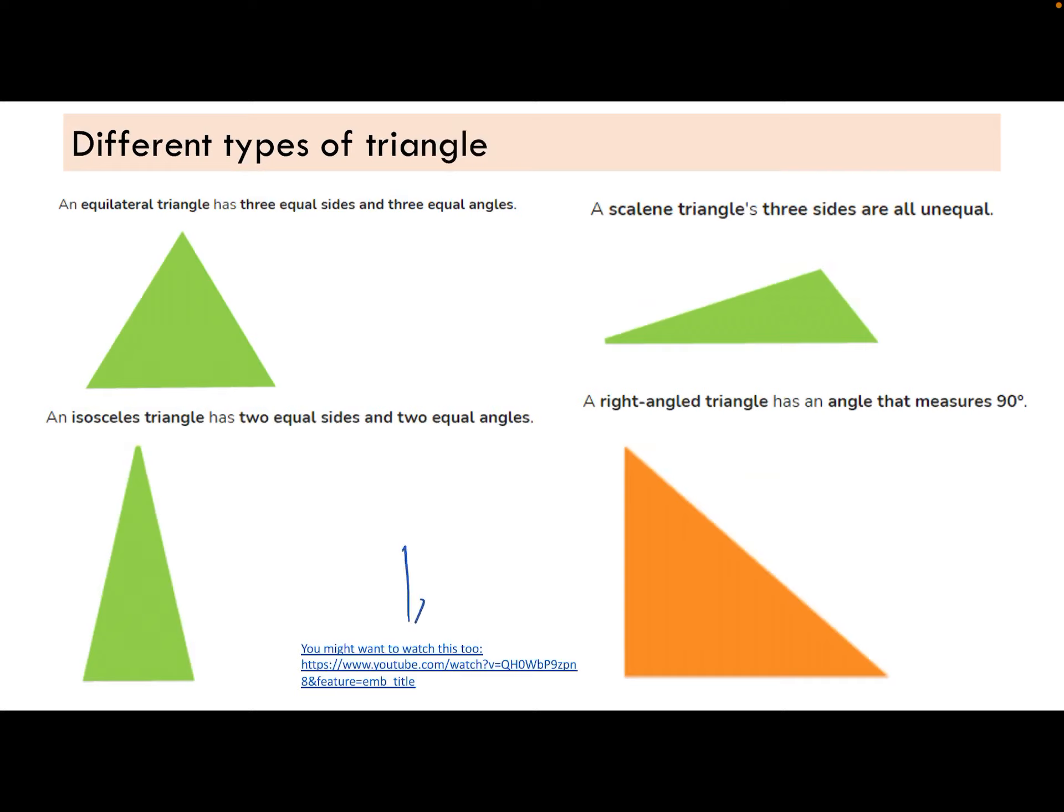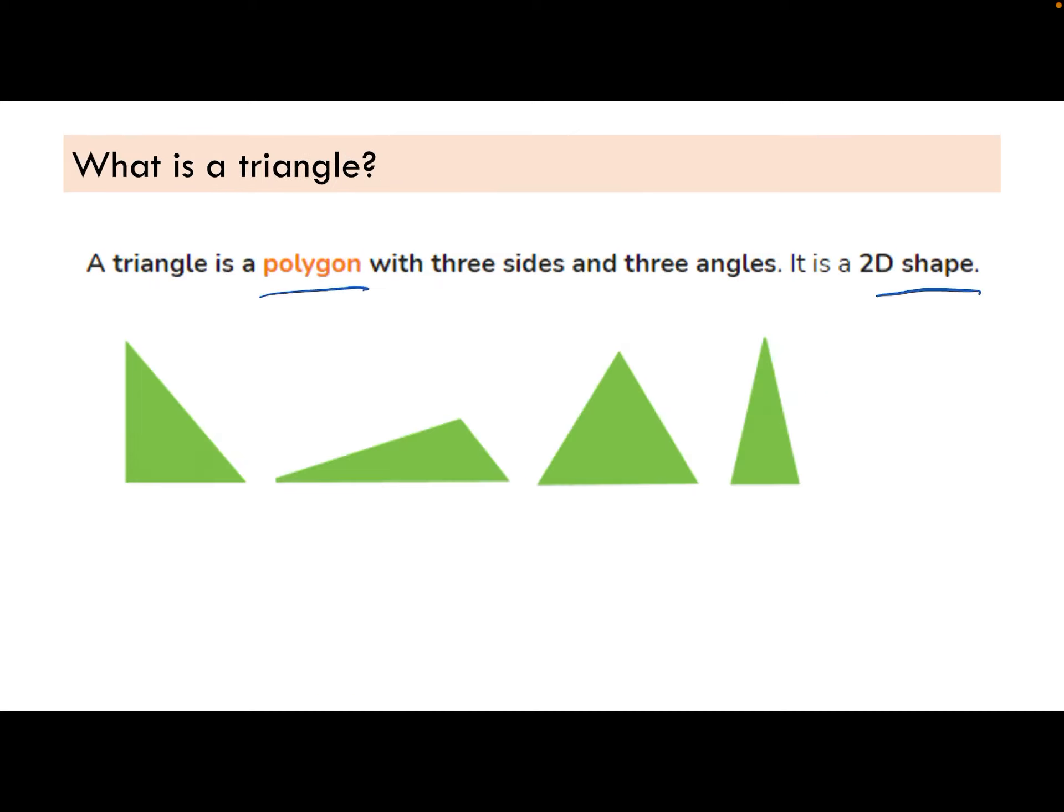So here's the three different types of triangle. I will put this in the comments. You can watch through it. It just sort of goes through what I'm about to say. And if I forget, I'm sure you will remind me. So we've got an equilateral triangle.